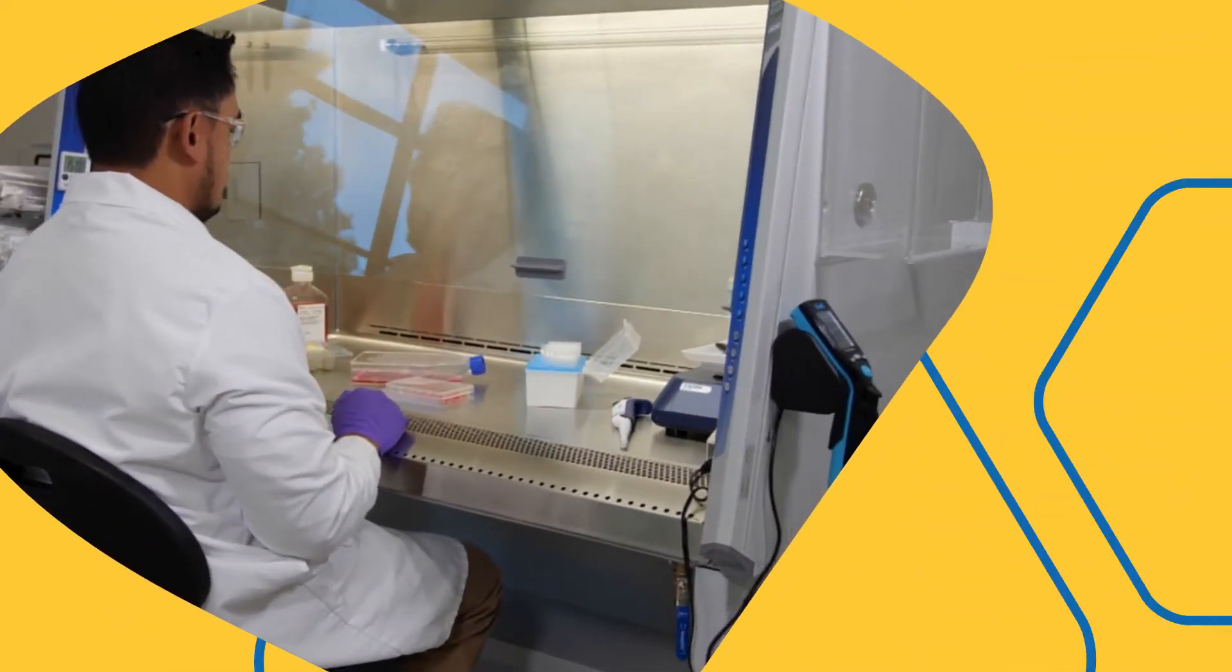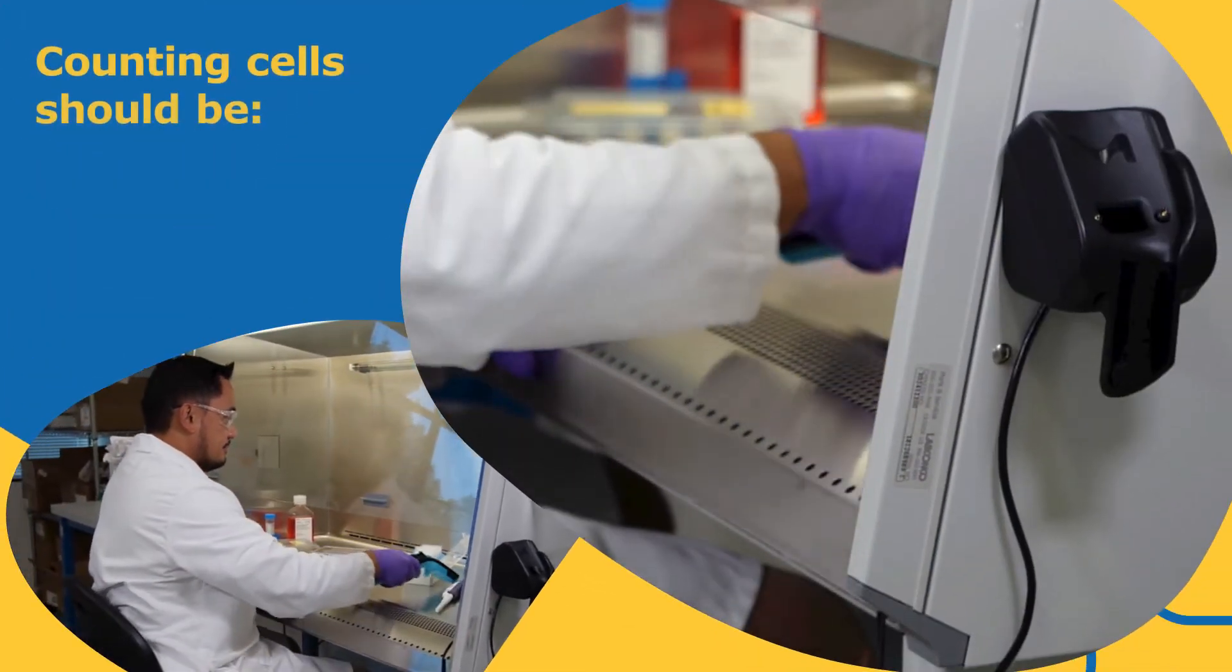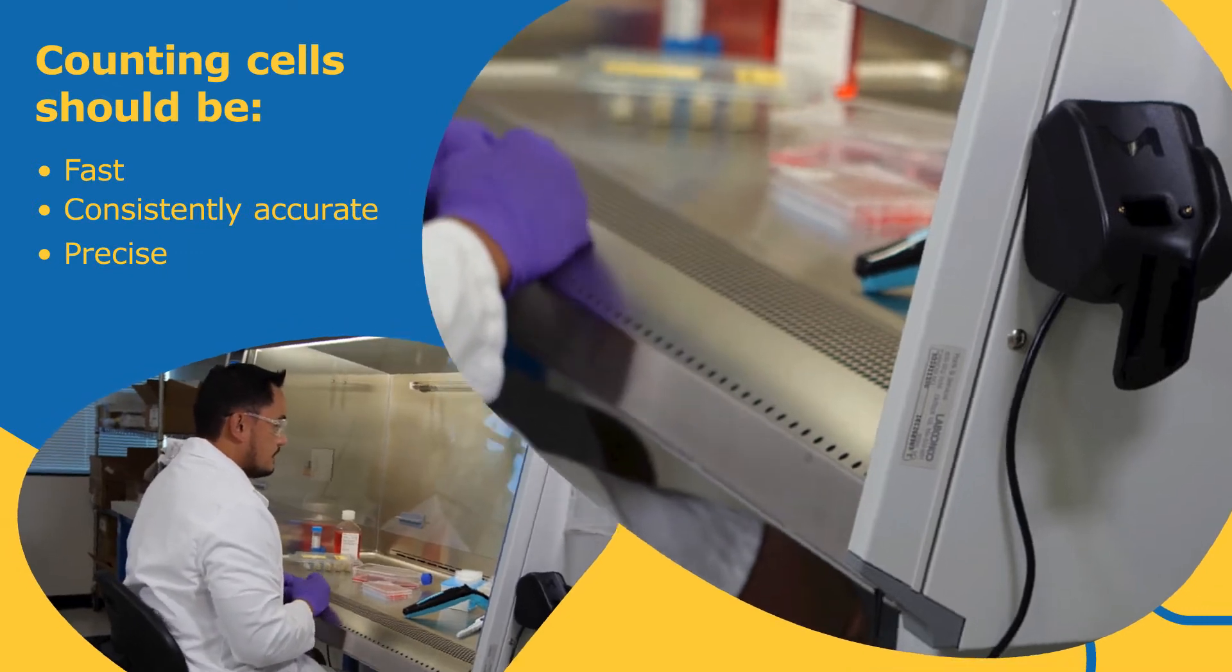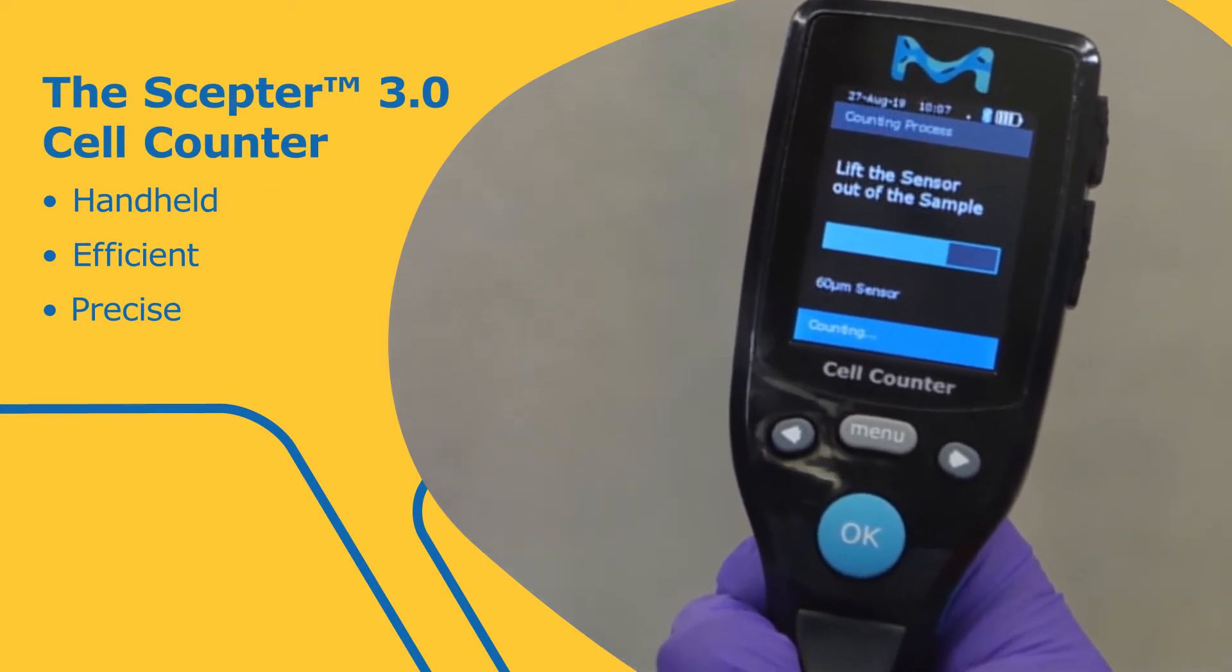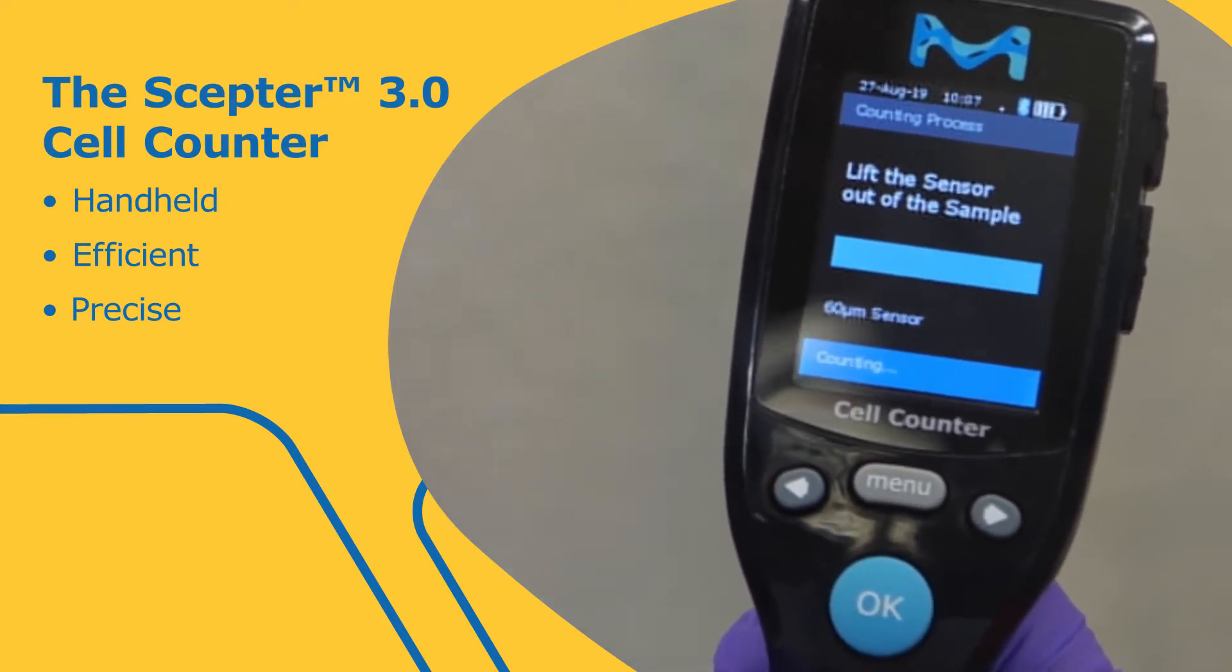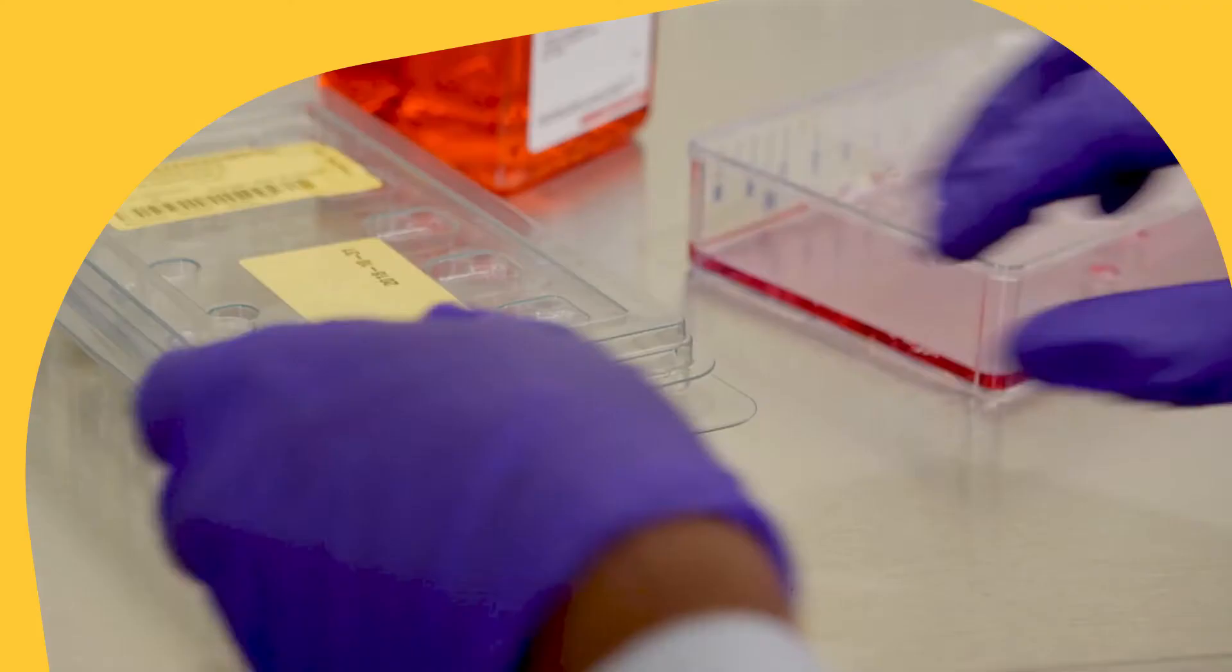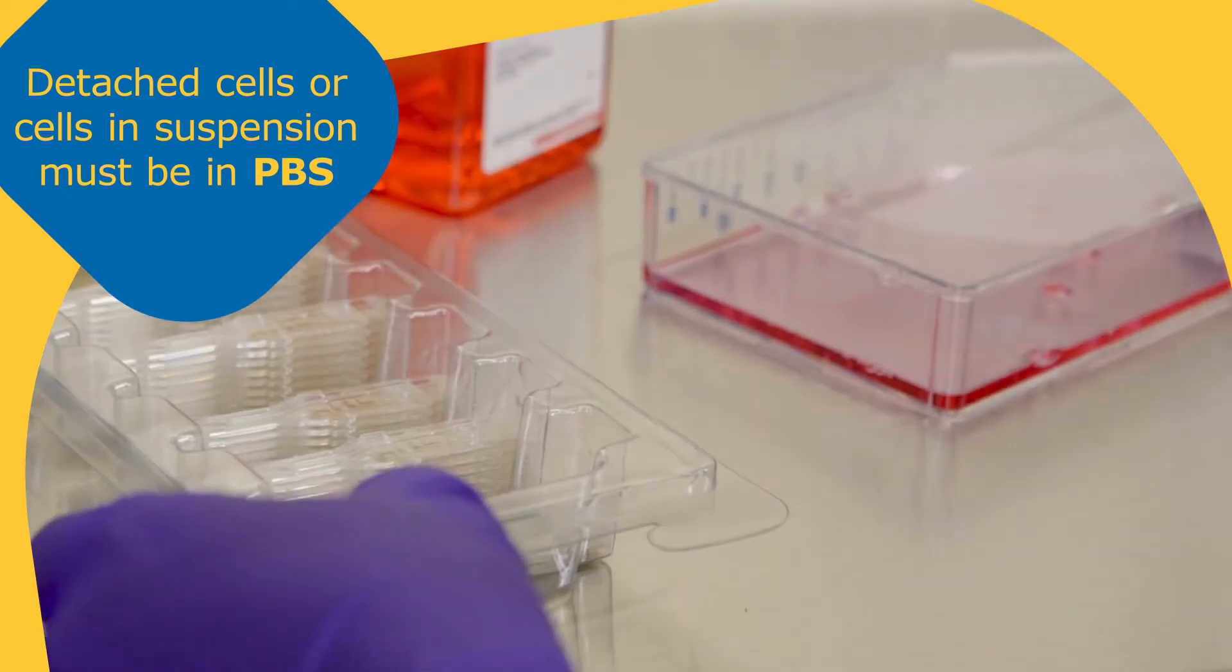What if counting your cells was an efficient integrated part of your cell collection or passage protocol and returned data with Coulter counter precision? The Scepter 3.0 handheld cell counter gives you the cell counts you need when time counts in the culture room—fast, accurate, and precise with impedance-based cell counts in seconds.